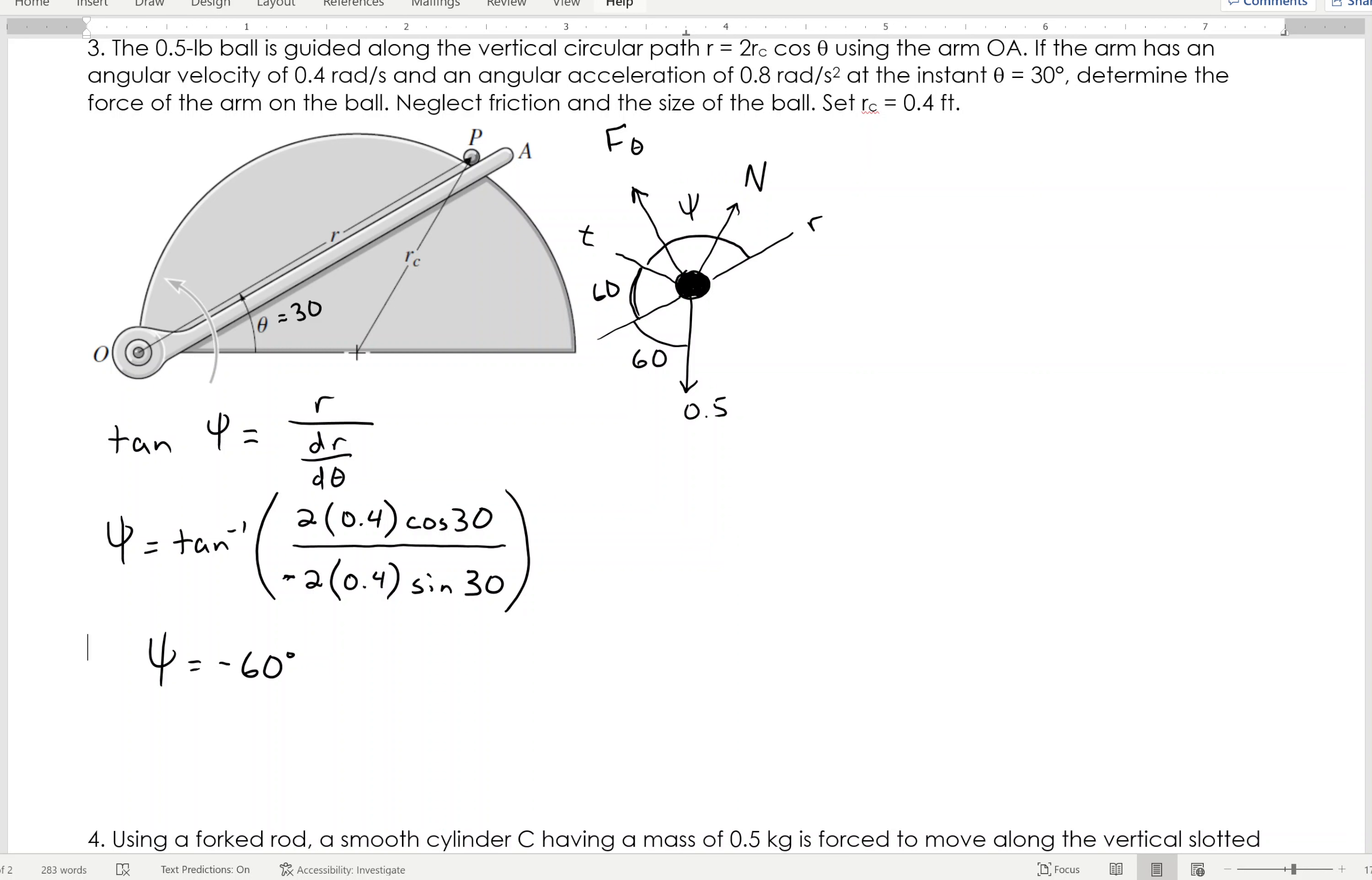Now, from all of that, I have a free body diagram that I can start applying my equations of motion to. So, I'll go ahead and right here, I'll start summing my forces in the R direction, and in an R direction, I'm going to have N, and that will be cosine of 30. So, again